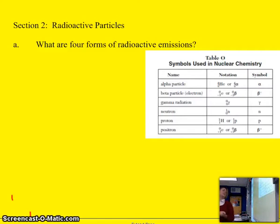Hi everybody, welcome back. This is Unit 3, Lesson 2, and we're going to talk about the four different radioactive particles. They're all listed here in Table O, which you have a copy of in your reference tables, because the copy in your notes is not very clear.